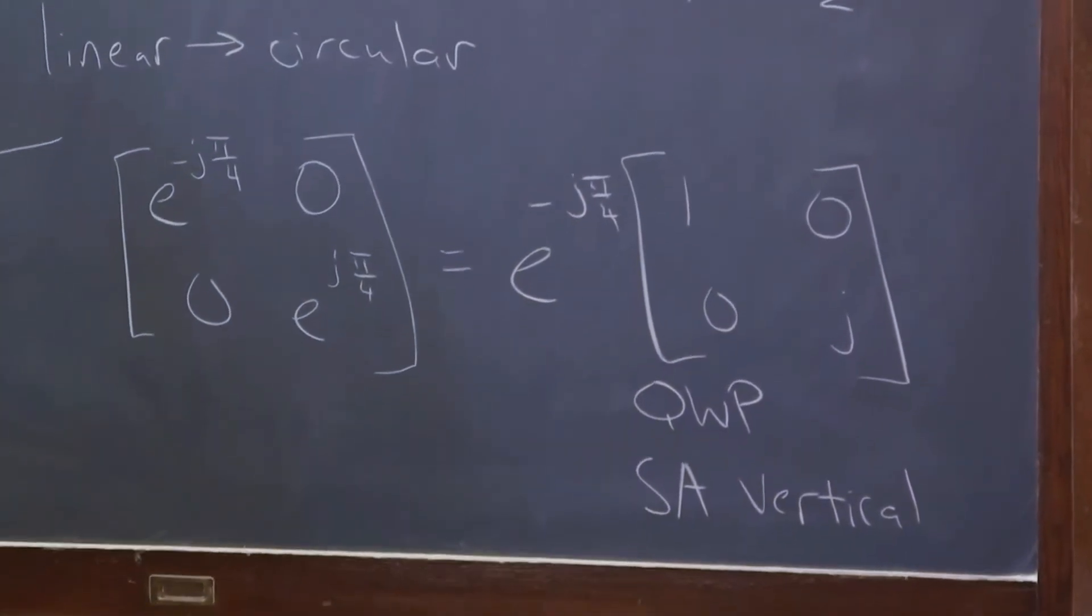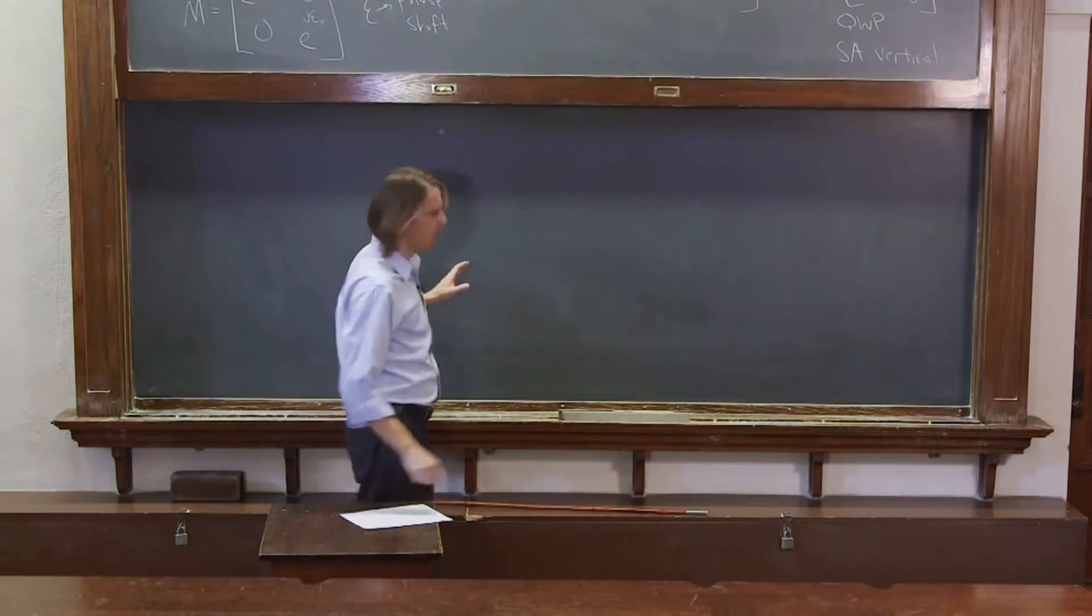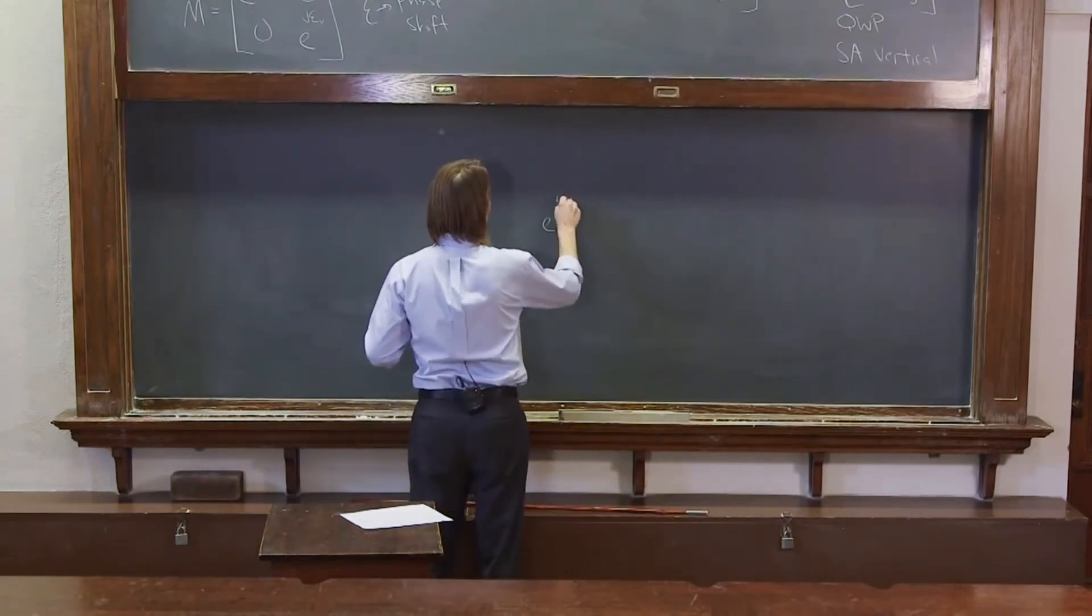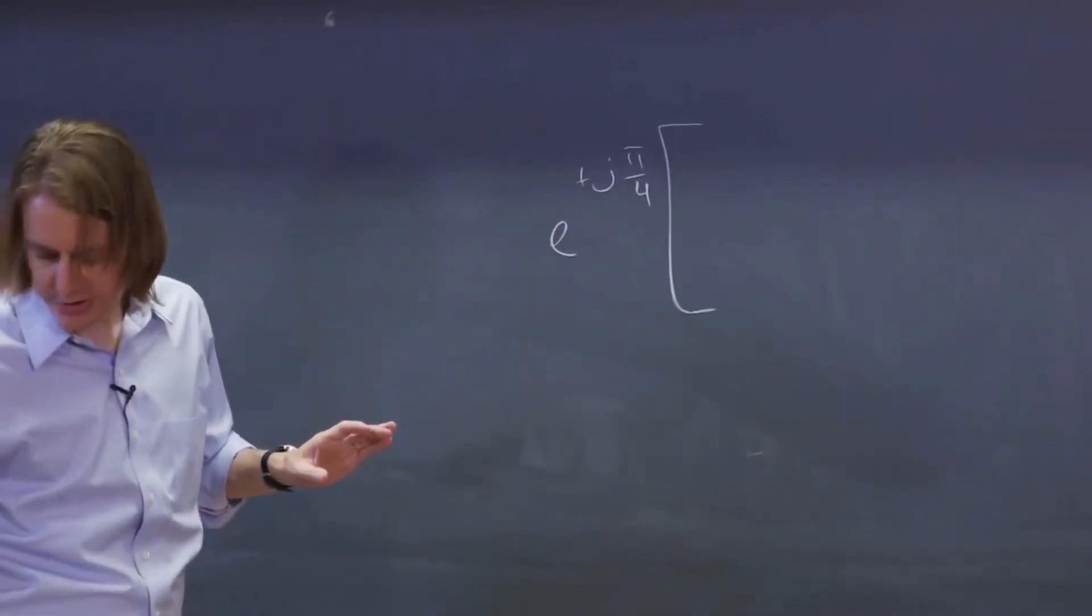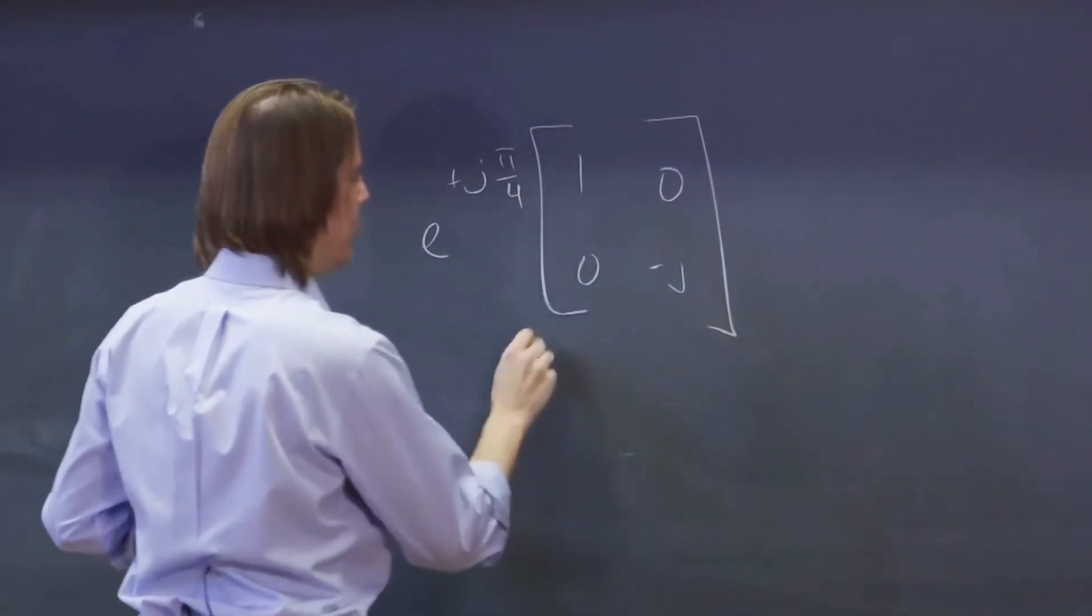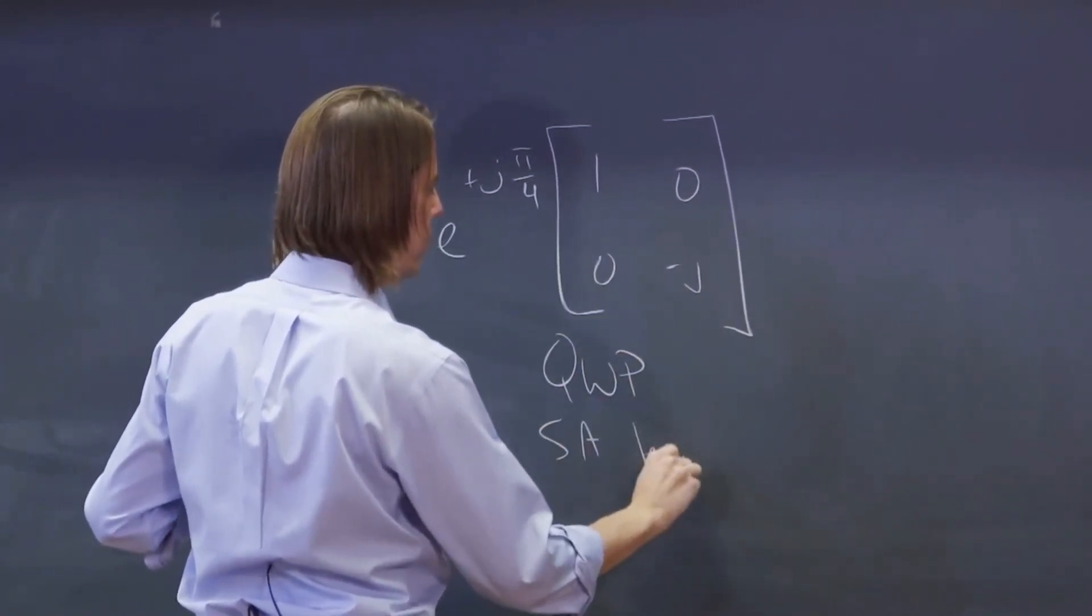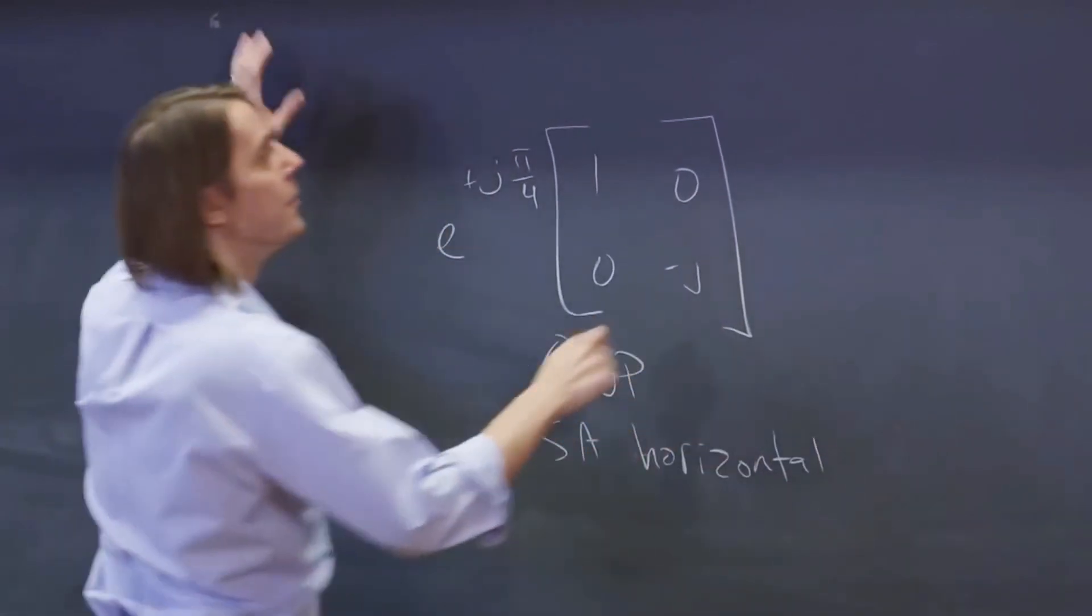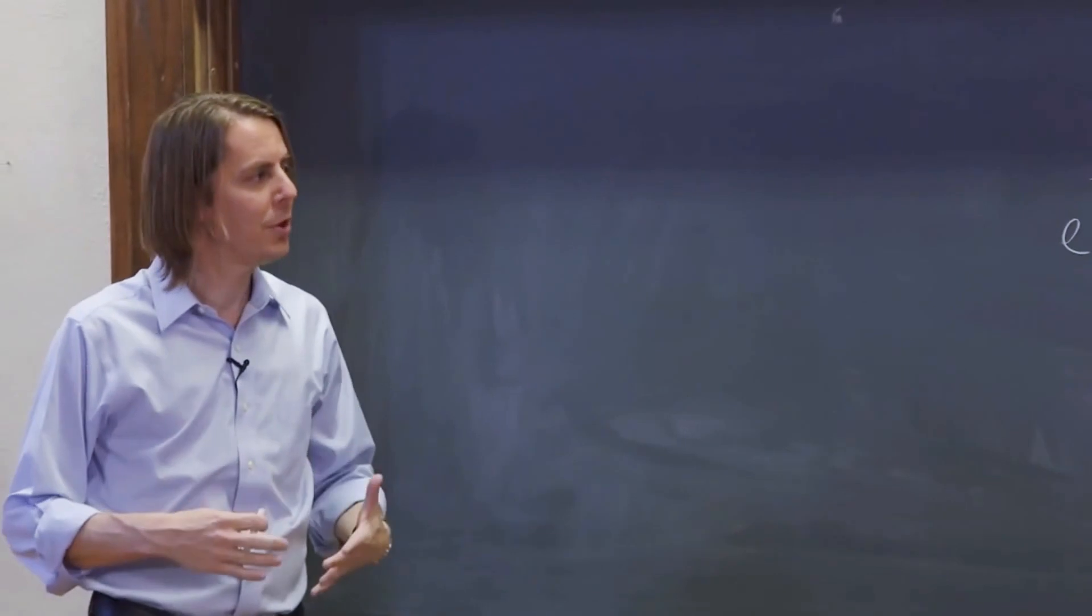Okay? And you can imagine, if we wanted to just make sure you have everything, we could give you a quarter wave plate, so e to the plus j pi over 4. And then this one is 1, 0, 0 minus j. This is a quarter wave plate, SA, horizontal.